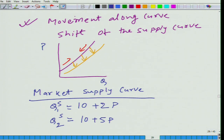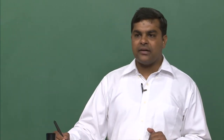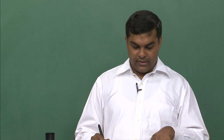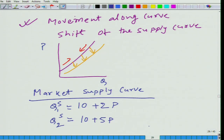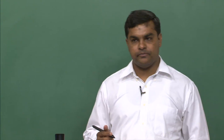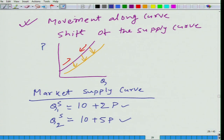For example, for the first supplier the supply function is 10 + 2p and for the second supplier it is 10 + 5p. Whenever you draw the supply or demand curve, note that the function is q as a function of p, but when we draw it we put p as a function of q. Many times in books you will see the supply function given as p as a function of quantity supplied — they are basically the same thing, inverses of each other. You can now get the market supply function on your own by adding the two individual supply functions.